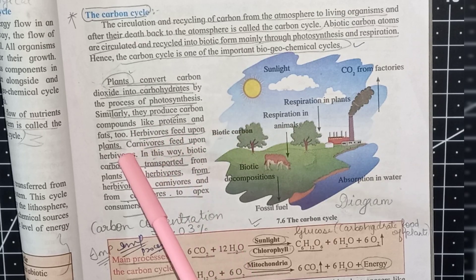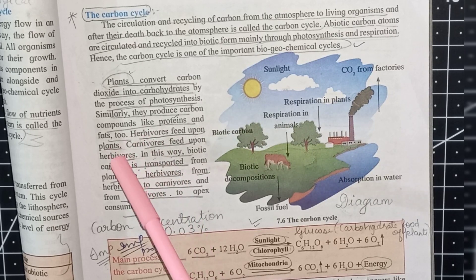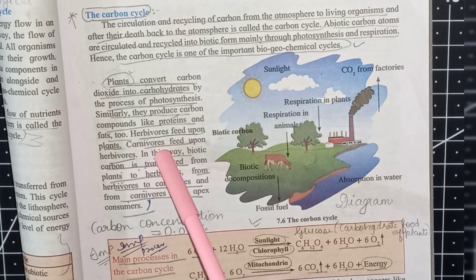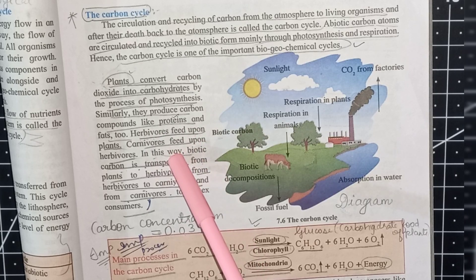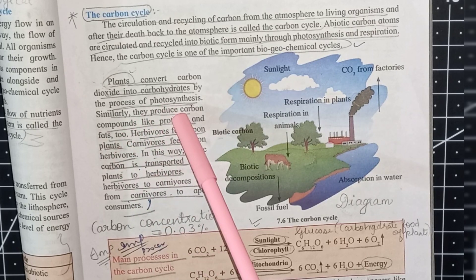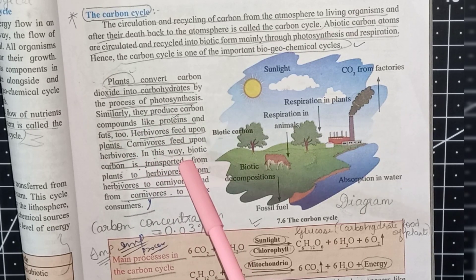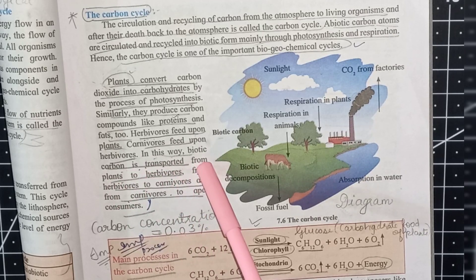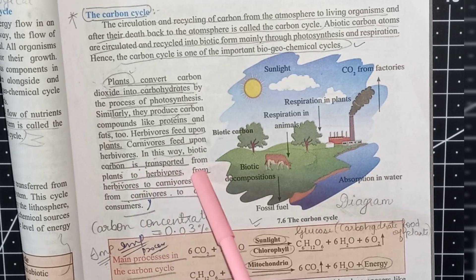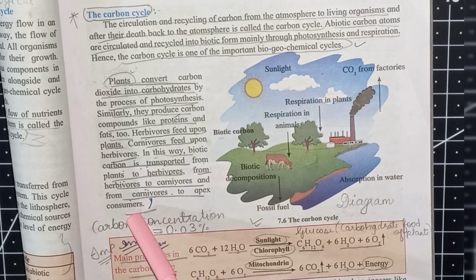Herbivores, such as deer and cows, feed upon plants. Carnivores, such as lions and tigers, feed upon the herbivores. In this way, bio-carbon is transported from plants to herbivores, from herbivores to carnivores, and from carnivores to apex consumers.